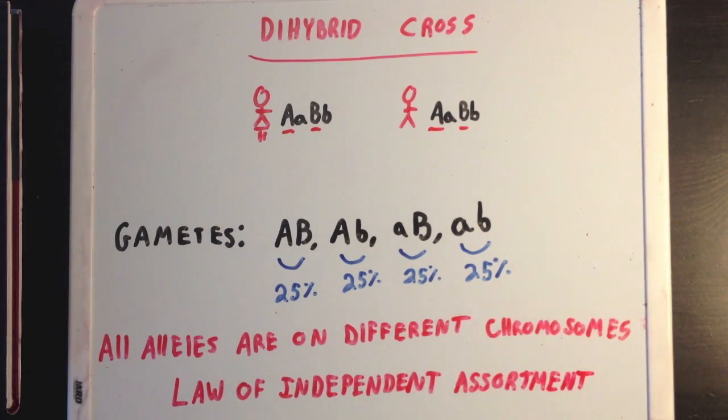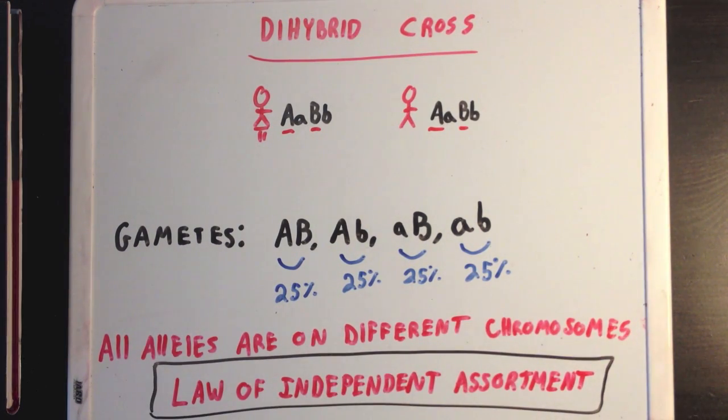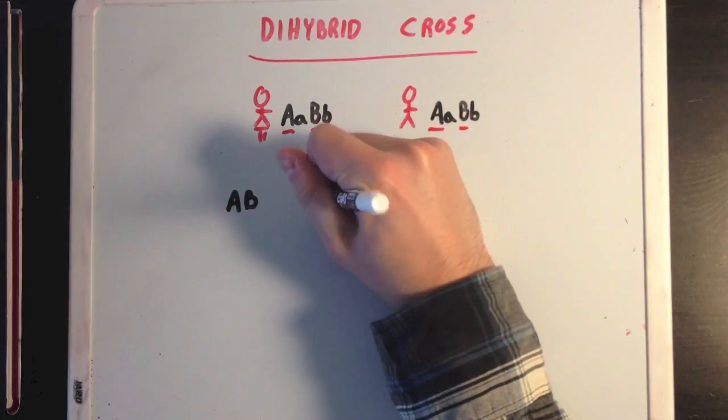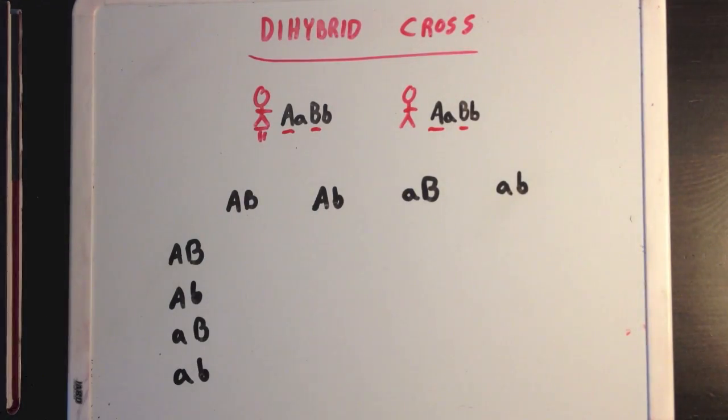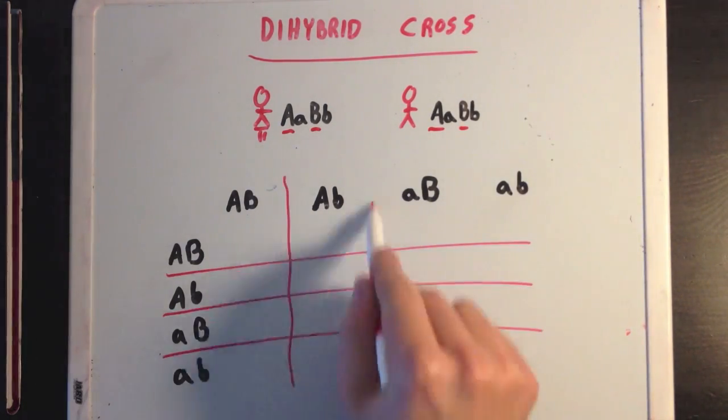This is called the law of independent assortment, which is a big buzz term when discussing genetics. Now, the Punnett square for this dihybrid cross is a little more complex than the last one was, but follows the same principles.